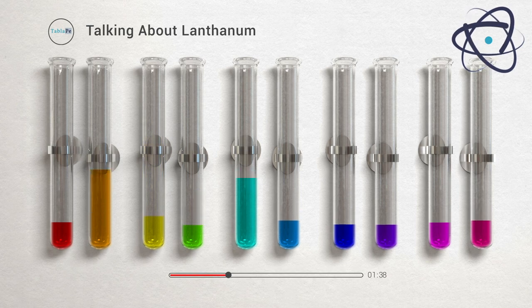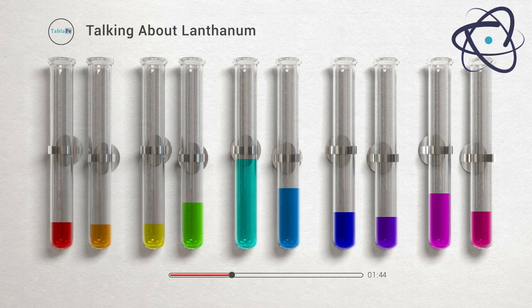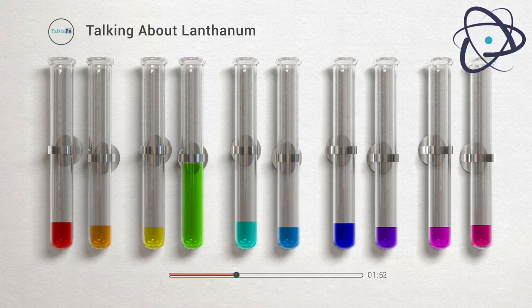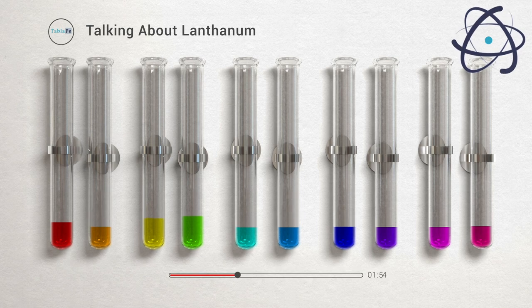He used nitric acid to decompose cerium nitrate. Although lanthanum was a naturally occurring element, it was not discovered until 1839. Mosander was able to extract lanthanum oxide from cerium nitrate, but the process was very difficult and he was unable to isolate pure lanthanum.